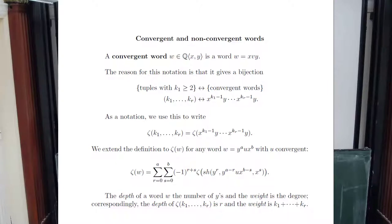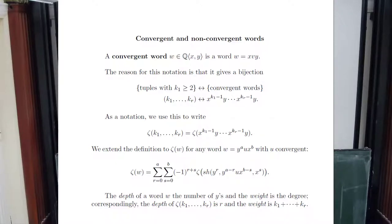I'm going to give you one last bit of notation in order to get to the point of associators. We have two non-commutative variables x and y, and any monomial in x and y is called convergent if it starts with x and ends with y. You'll see why. There's an obvious bijection between the tuples and words like this. If you start with x and end in y, then k1 is greater than or equal to 2. We use this notation, and this is the real number—that's why I call these convergent words.